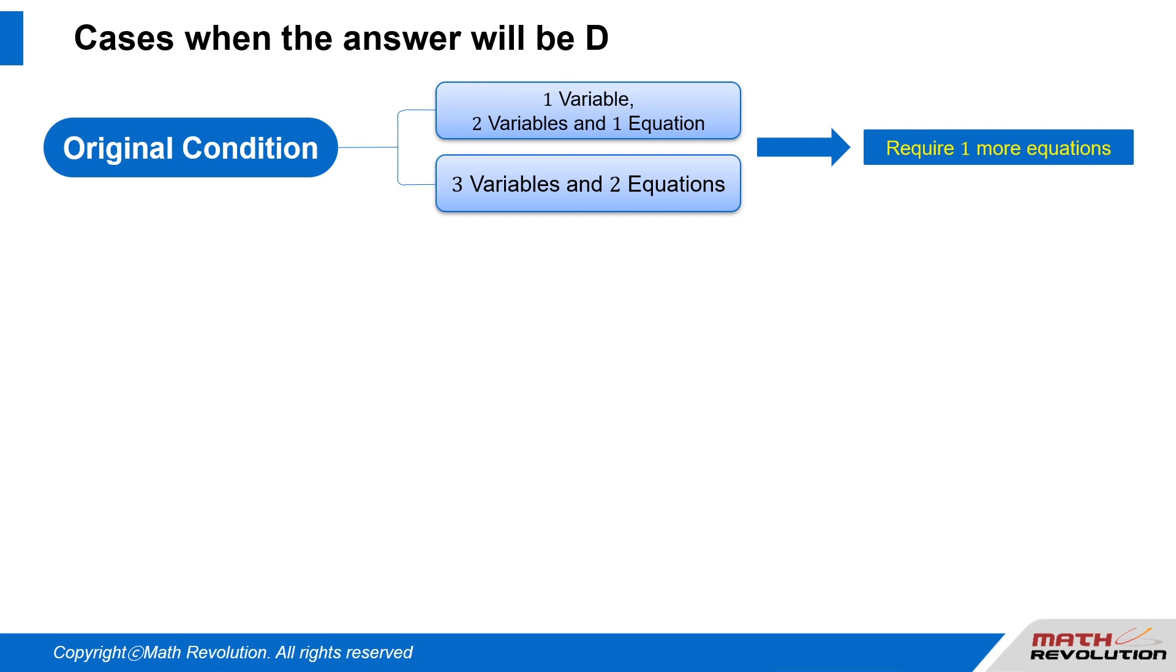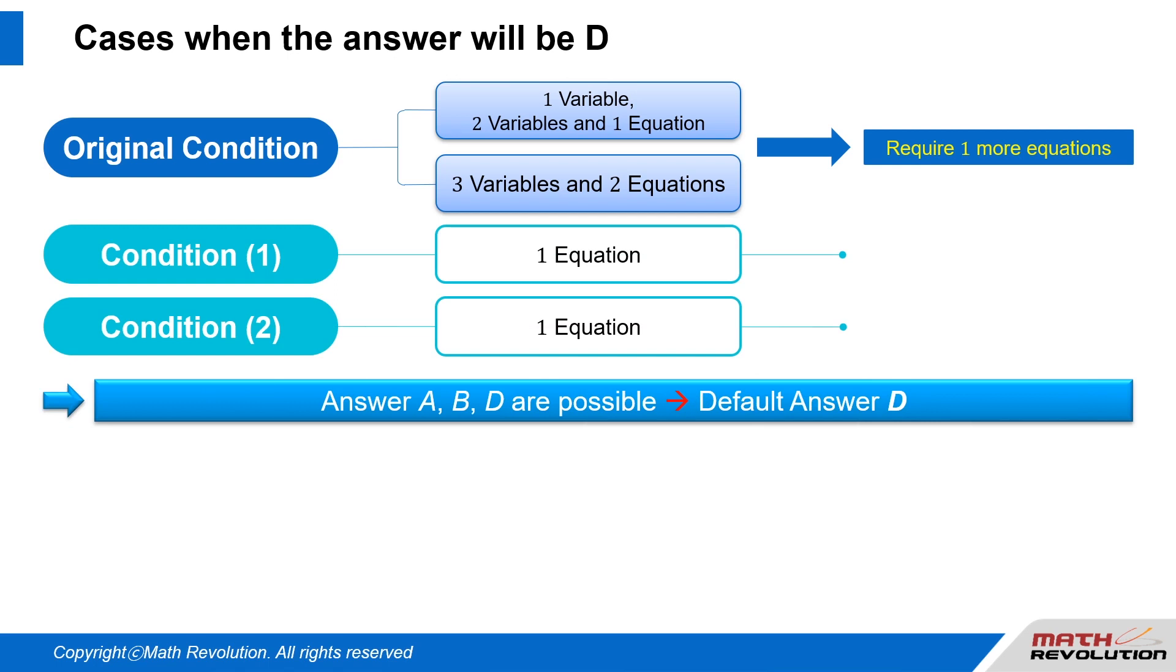Since we need one more equation to match the numbers of variables and equations in the original condition, we will have two more equations, one from condition 1 and one from condition 2. The equal number of equations and variables should logically lead to answer D.